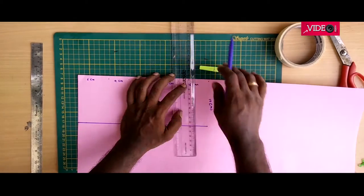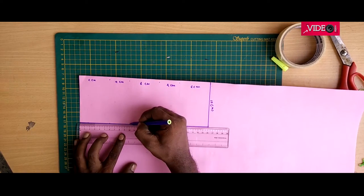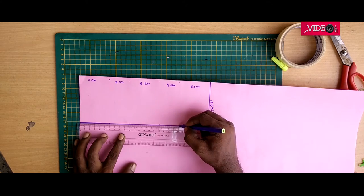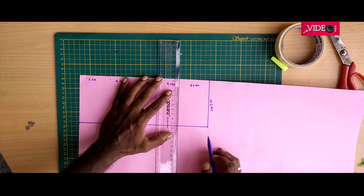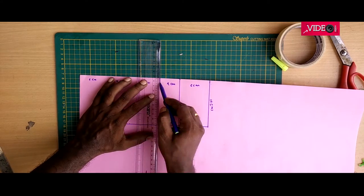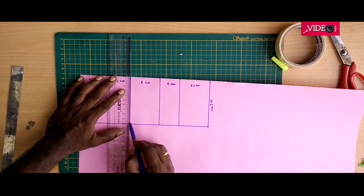Take the chart paper and mark a 26 centimeter by 10 centimeter strip and divide it like this: 6 centimeter, then 4 centimeter, 6 centimeter again, 4 centimeter, and then again back to 6 centimeters.